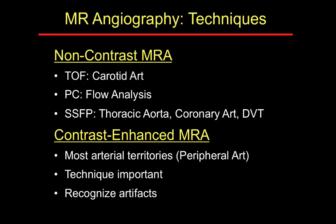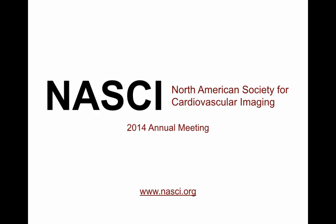In summary, MRA techniques include non-contrast methods — time-of-flight for intracranial and carotid arteries, phase contrast for flow analysis, SSFP for thoracic aorta, coronary arteries and venous thrombus — and contrast-enhanced MRA, which is good for most other arterial territories. Gadolinium provides an extra boost to arterial signal, allowing rapid coverage of large territories such as the peripheral arteries. Technique is very important, and it's essential to recognize artifacts that can occur. Thank you very much.